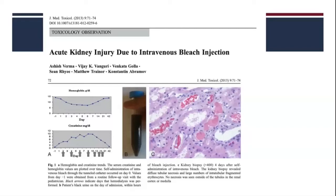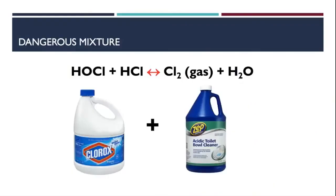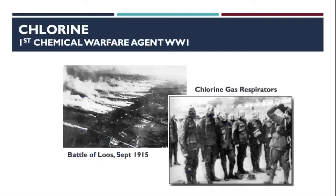Sodium hypochlorite can react with a variety of substances—water, ammonia, and other acids. This is not infrequent in households where one may accidentally mix chemicals, particularly into a toilet, forming either chloramine, chlorine, or hydrochloric acid. The common mistake of mixing bleach with an acid forms chlorine gas. Chlorine gas was the first chemical warfare agent used during World War I, causing devastating pulmonary injuries to hundreds of thousands of troops.